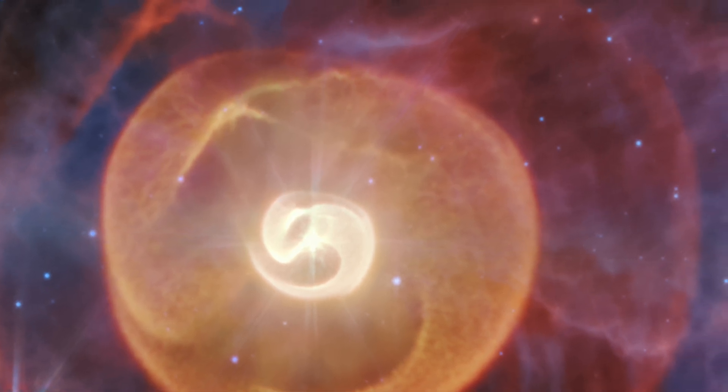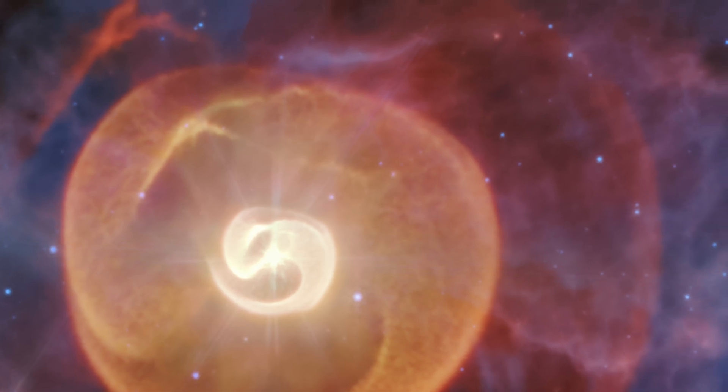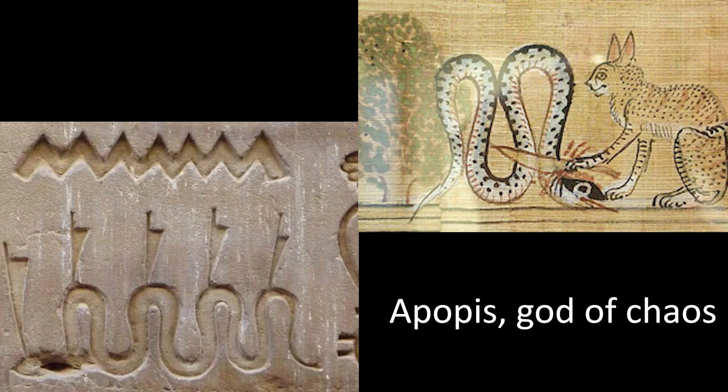We can see four beautiful spirals here, formed around a system of stars called Apep, named after the Egyptian god of Chaos Apophis.